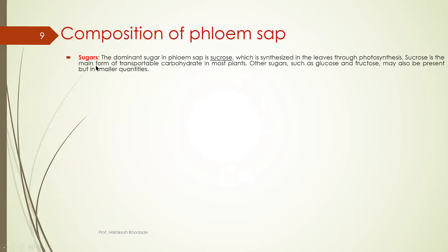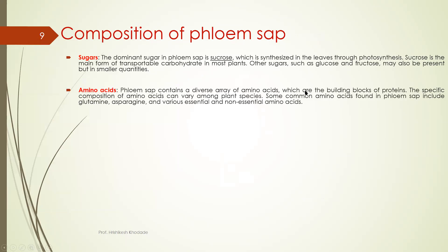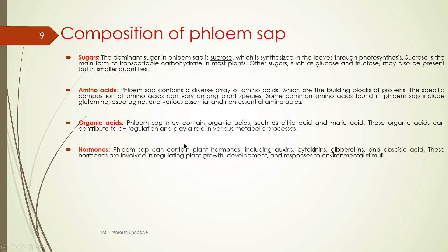So composition of phloem sap includes sugar, mainly sucrose. Then we have amino acids, various diverse different types of amino acids which are required for protein synthesis. Then we have organic acids such as citric acid. Other organic acids are transported in phloem sap.